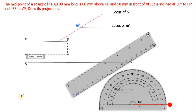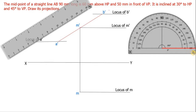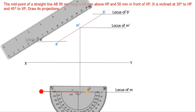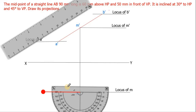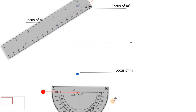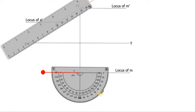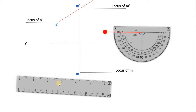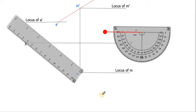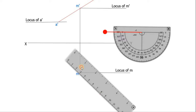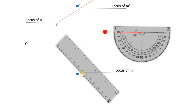Now draw the line inclined to VP. Take the protractor, keep M as center, and mark 45 degrees. Place the scale so it aligns through M and the 45-degree mark. As with the HP line, this line should have M as the midpoint — 45 mm on each side.